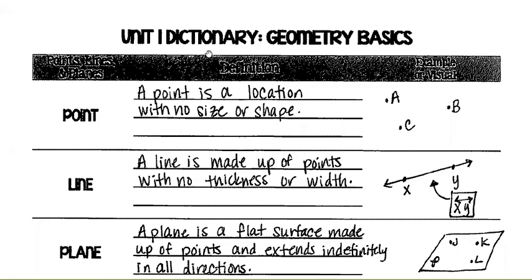Alright guys, so unit one: dictionary geometry basics — points, lines, and planes. On one side will be the terms, in the middle will be the definition, and we'll try to give you a picture example. This is going to be the video lesson, so just pay attention and let's see if you guys can understand.